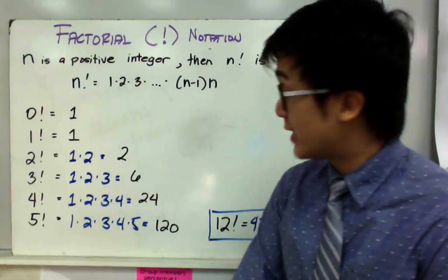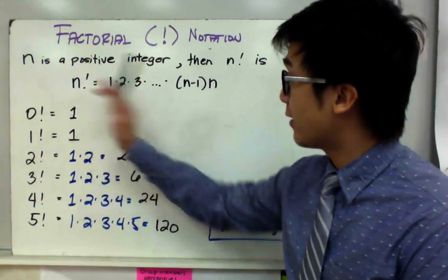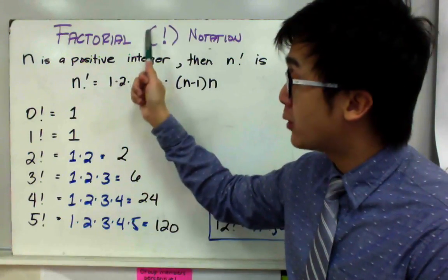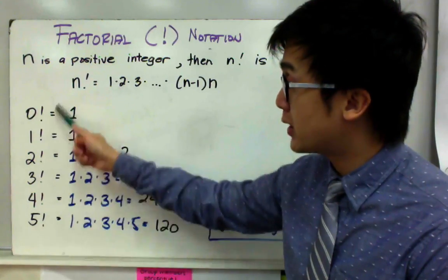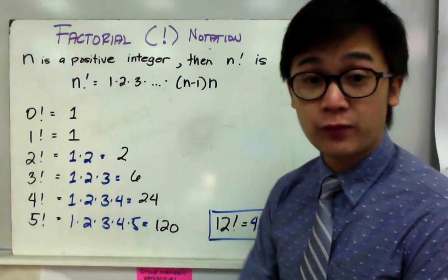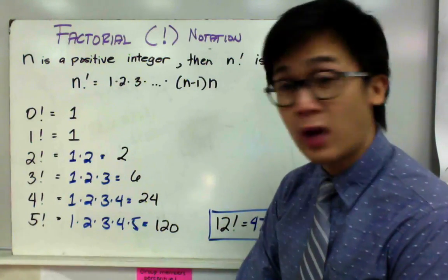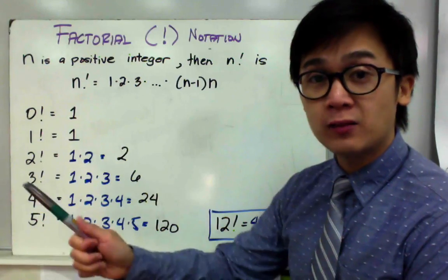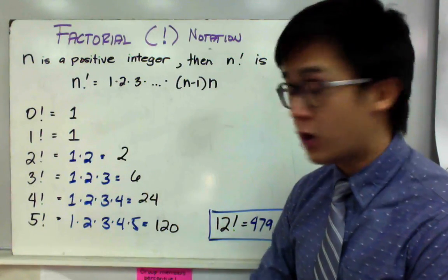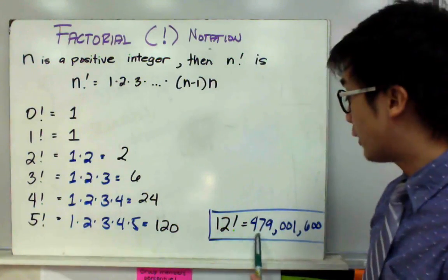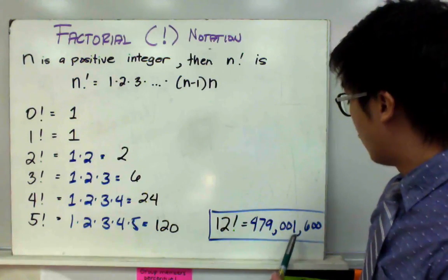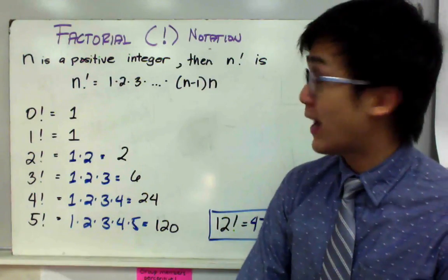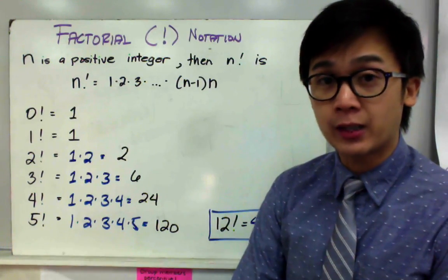That's how we evaluate factorial notation using the formula. Every time you see the exclamation point, perform the operation accordingly. For example, 12 factorial means 12 times 11 times 10 times 9, all the way down to 1, which equals 479,001,600. That's how we perform factorial notation in mathematical problems.